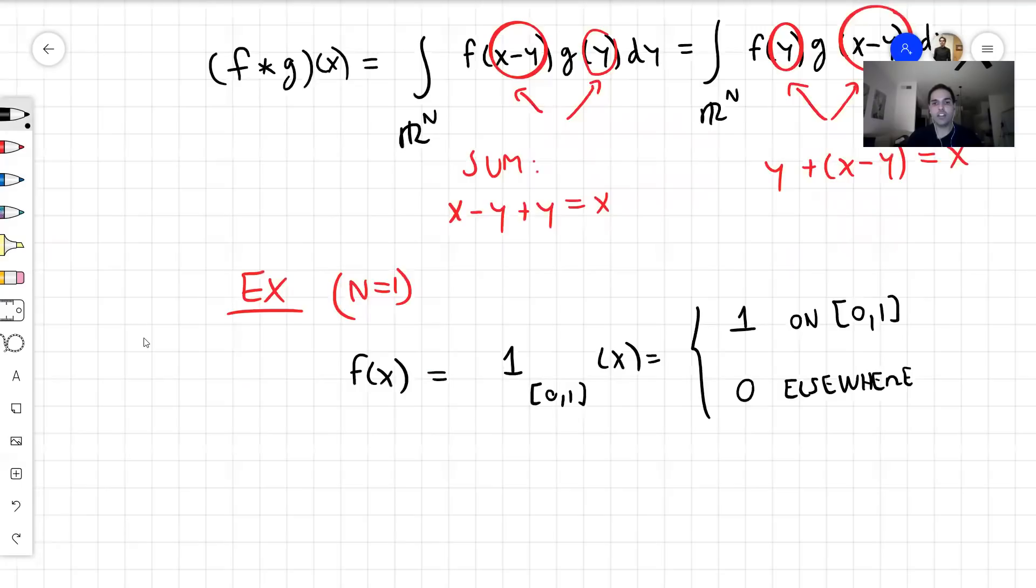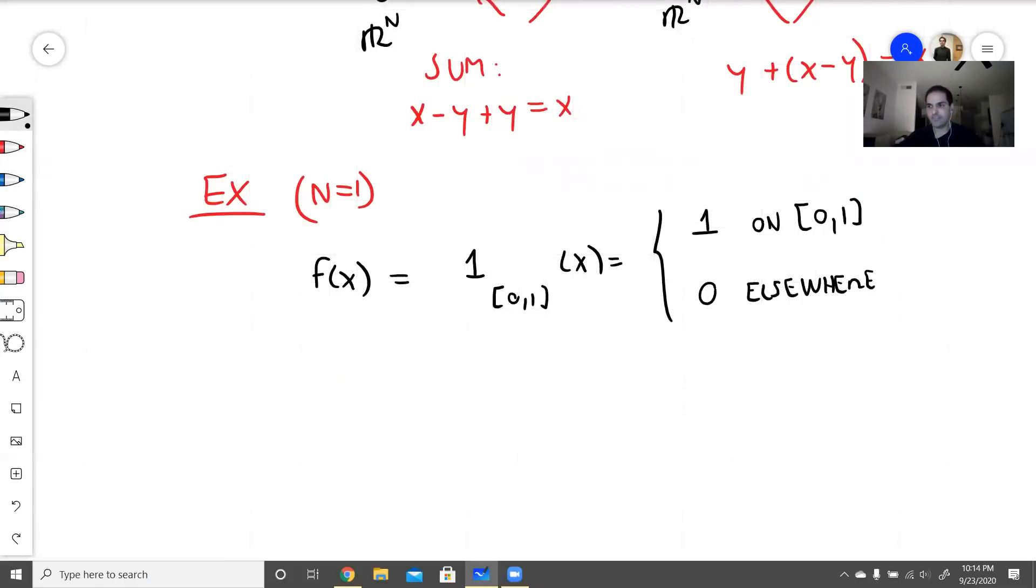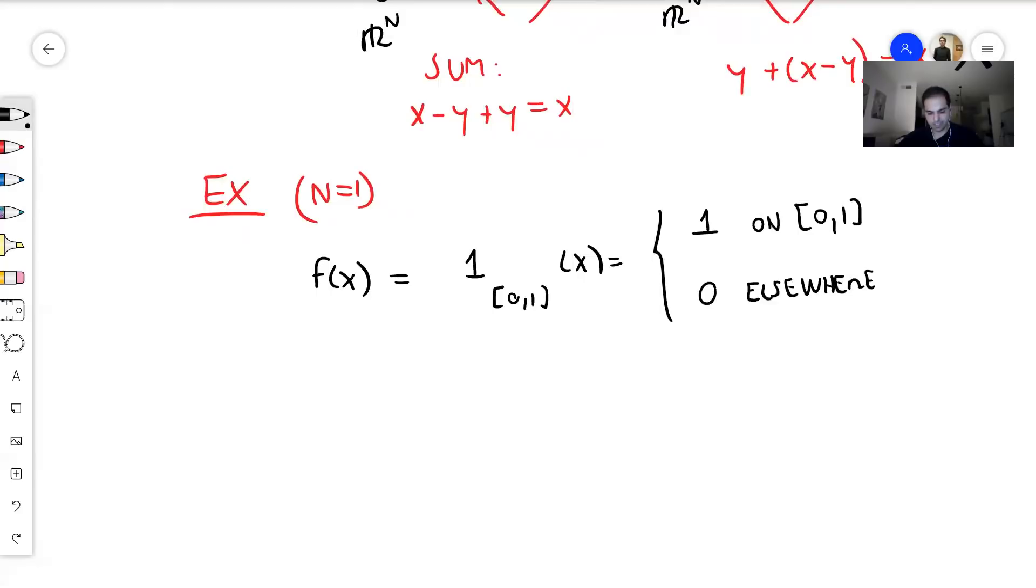If you want, it just looks as follows. Let me use my ruler. So again, if you're on the interval (0,1), it is 1. So it might look something like that. Here it is 1 and then elsewhere it is 0. So this is f.